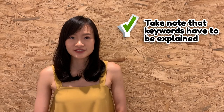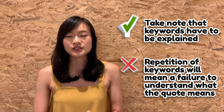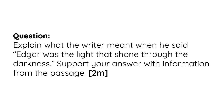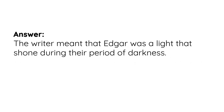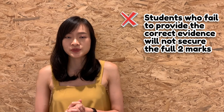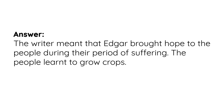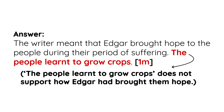When explaining the quote, students must take note that keywords have to be explained. Mere repetition of the keywords means a failure to understand what the quote means. For example, a wrong answer: 'The writer meant that Edgar was the light that shone during the period of darkness.' Note how the keywords — light, shone, and darkness — are simply repeated with no explanation. Also, students who fail to provide the correct evidence will not secure the further marks. Ensure that you have highlighted the correct clues to support your explanation. For instance: 'The writer meant that Edgar brought hope to the people during their period of suffering. The people learned to grow crops' — note how 'the people learned to grow crops' does not support how Edgar had brought them hope.